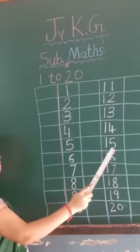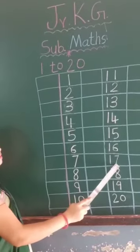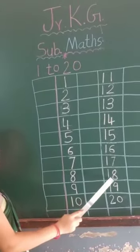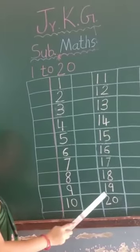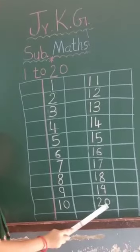1, 5, 15. One, six, 16. One, seven, 17. One, eight, 18. One, nine, 19. Two, zero, 20.